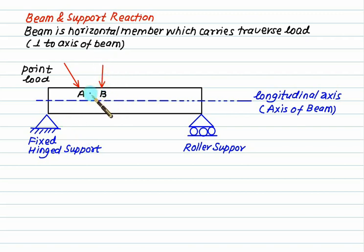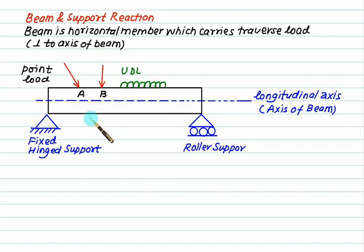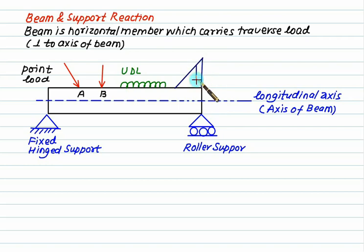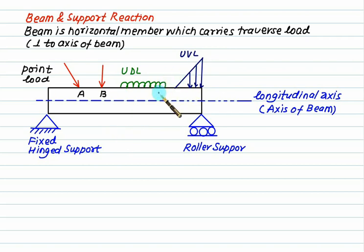Sometimes the load is distributed over a particular length — that is normally represented as a uniformly distributed load, called UDL for short. Similar to UDL, we have a uniformly varying load where the load intensity varies from zero to some value, called UVL, or uniformly varying load. In addition to these, there are other types of loads we will discuss later.